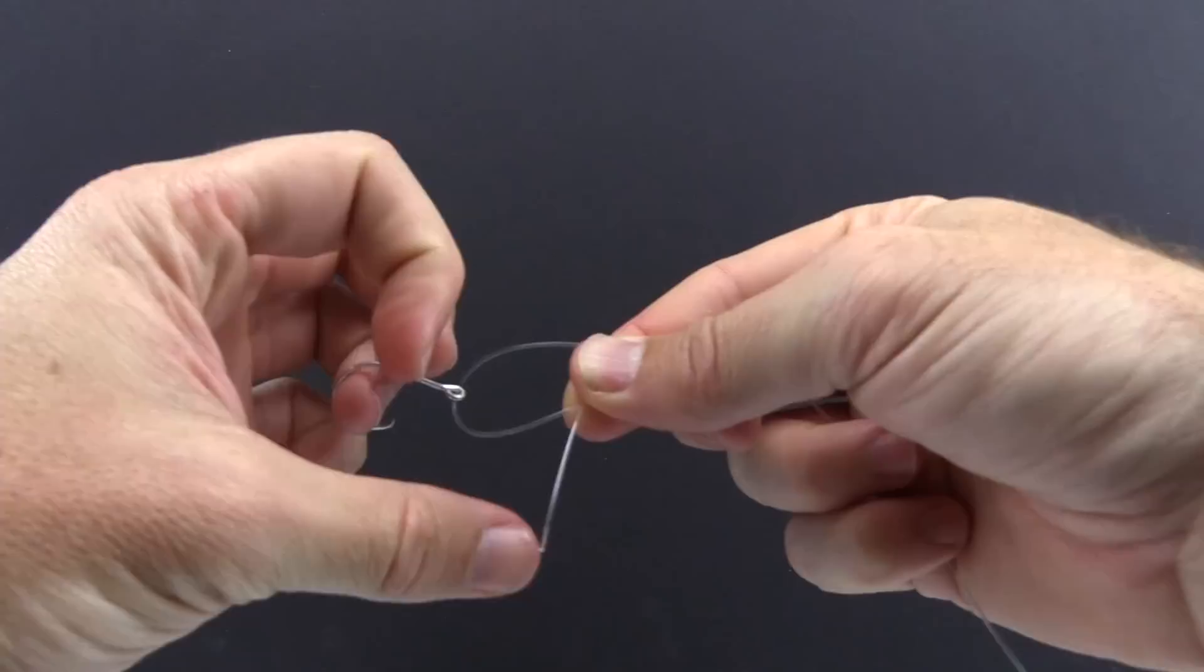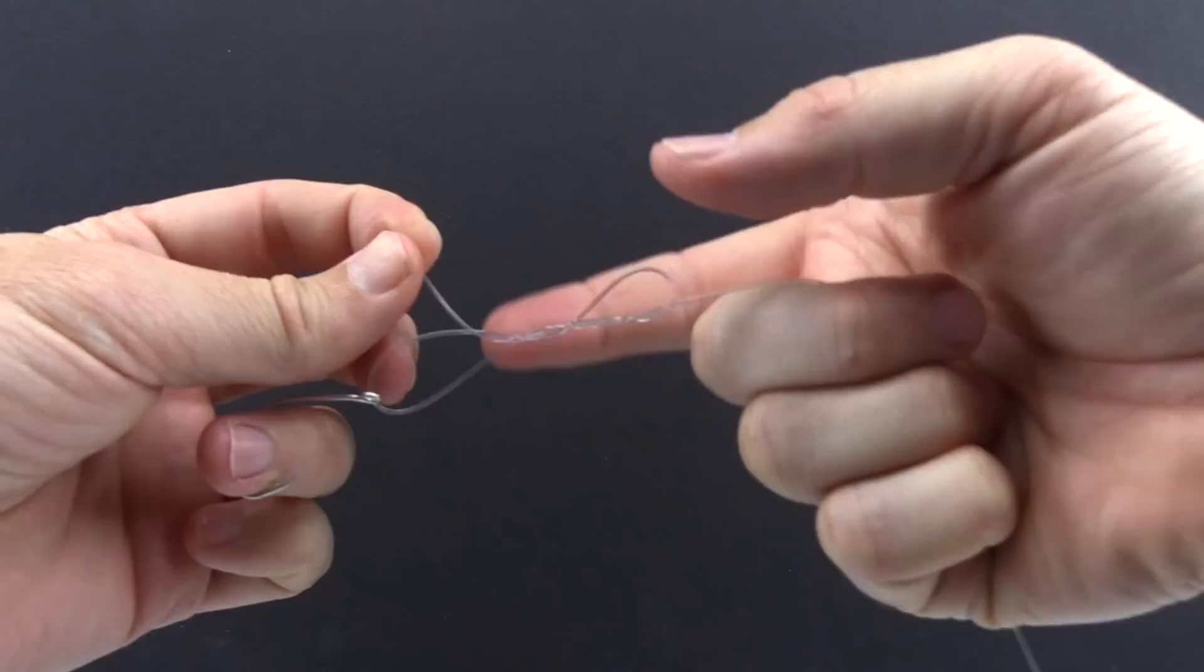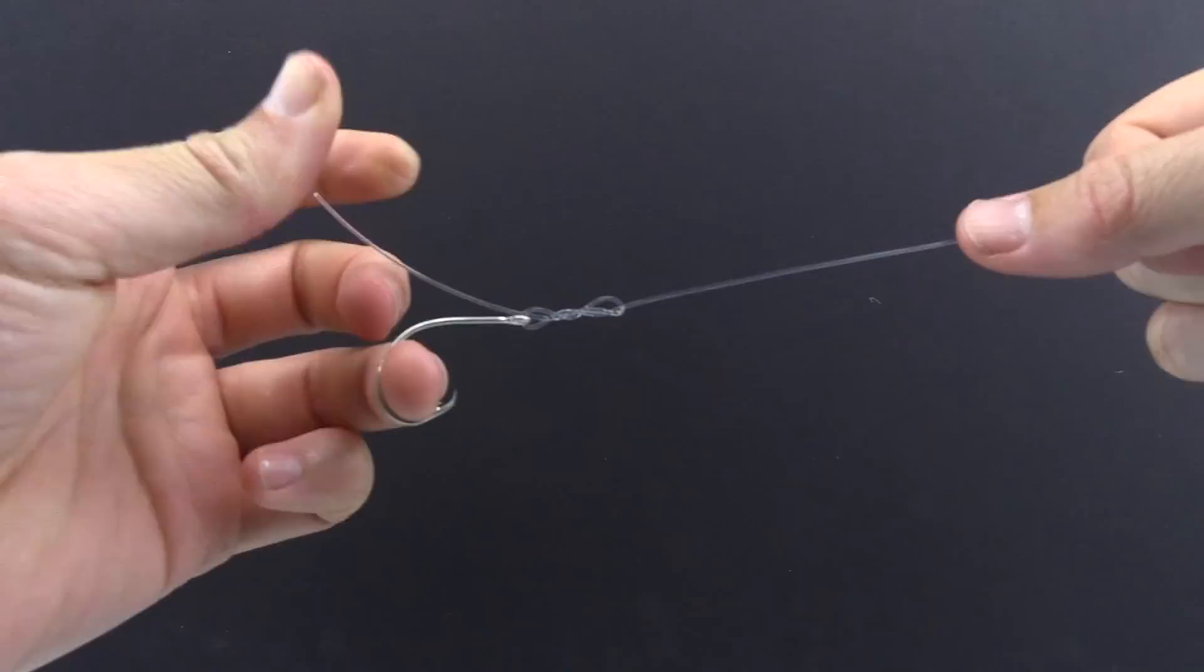This is the single Davy knot but we still have this loop and we're going to do this tag end through this loop one more time to be the double Davy knot. So take that tag end through so now we've basically just done a hitch knot and then wrapped around again for the Davy and then wrapped around a third time for the double Davy.